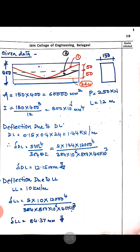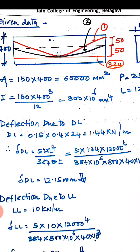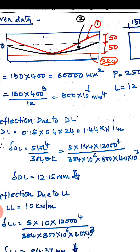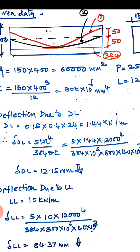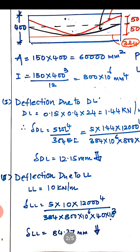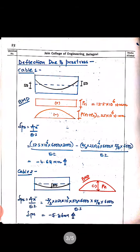Next, find the deflection due to pre-stress plus self-weight. The dead load is calculated as 0.15 × 0.4 × 24 = 1.44 kN/m. The deflection due to dead load using 5wL⁴/384EI gives 12.15 mm. The live load is given as 10 kN/m, so the deflection due to live load using the same formula, with EC = 40 kN/mm², gives 84.37 mm.